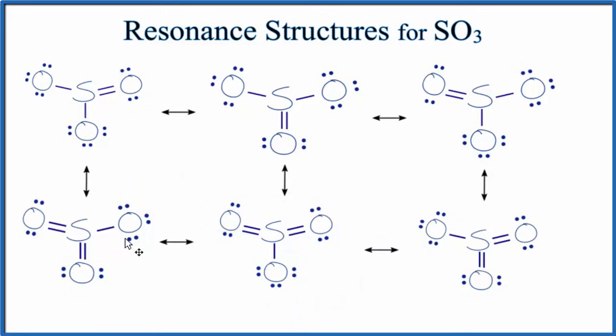Now we've drawn six resonance structures for SO3. Notice we have these arrows here again. That's just showing that these are all resonance structures. There's something really important that we should think about with these resonance structures. These arrows don't mean that these structures are changing back and forth.